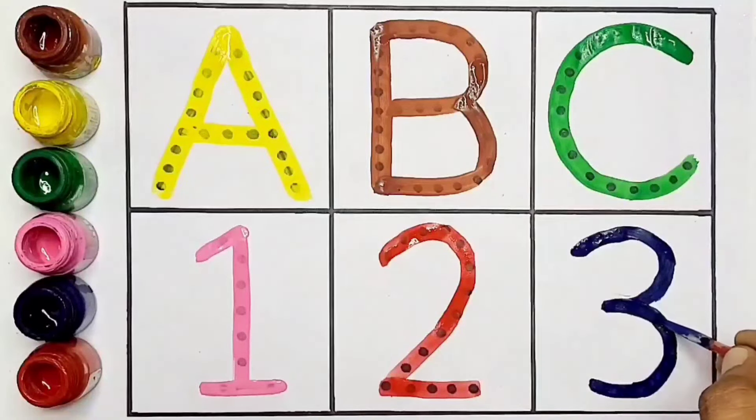A. A for apple. B. B for ball. C. C for cat. 1. O-N-E. 1. 2. T-W-O. 2. 3. T-H-R-E-E. 3.